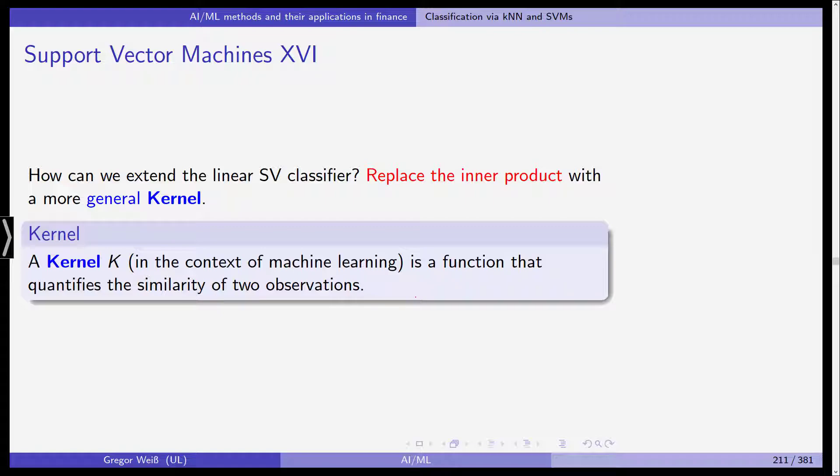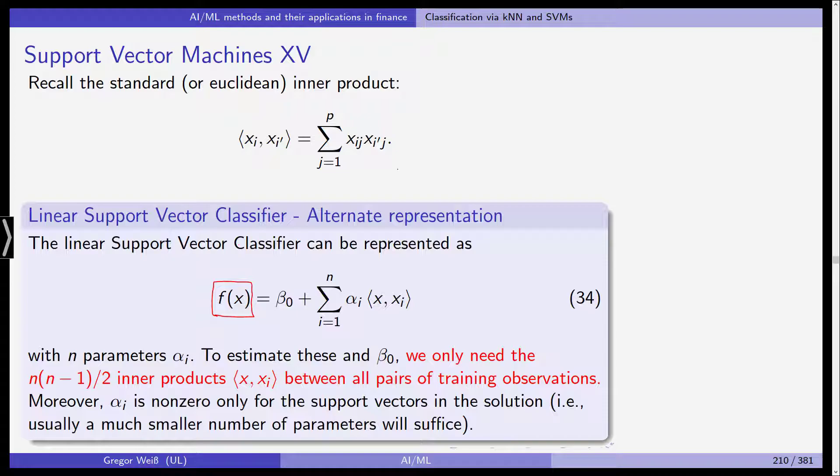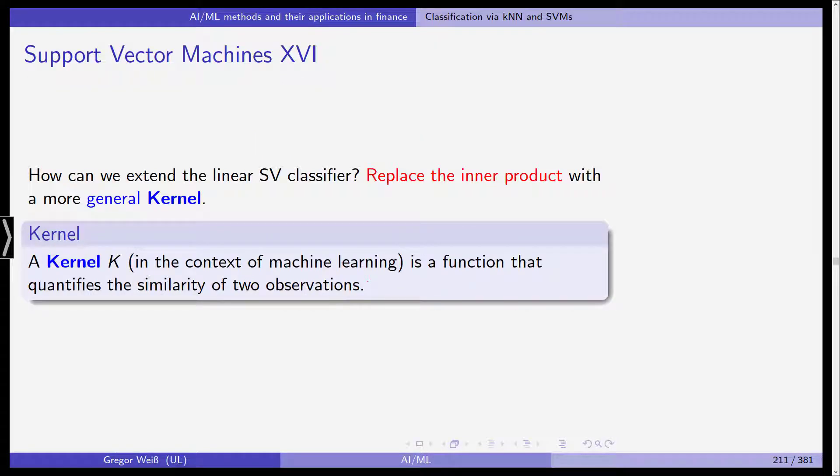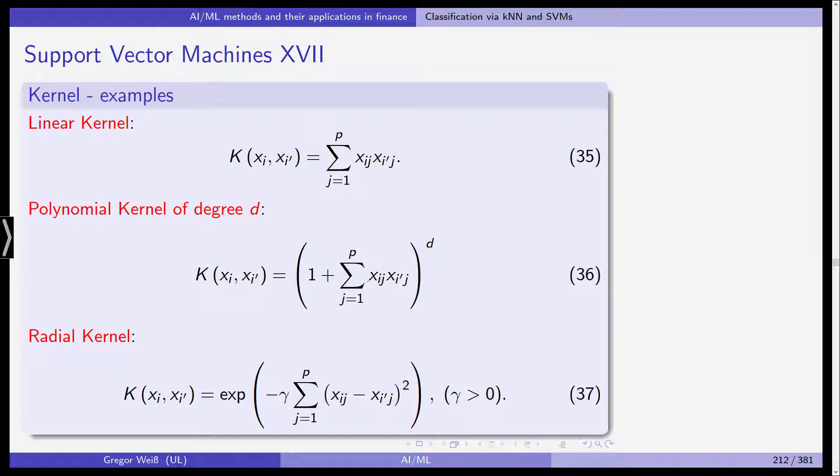What is a kernel? A kernel k, at least in the context of machine learning, has slightly different meanings in different parts of mathematics and statistics. But here in the context of machine learning, a kernel is a function that quantifies the similarity of two observations. So, we have two observations, x1 and x2, and a kernel is a function that in some way measures the similarity. It could also be the distance between those two points, and this is what we call a kernel. Quite clear, in the case of the inner product, this is of course a function that measures the distance in the Euclidean space between those two vectors. So, we need to replace the inner product here with a different kernel, and then we get a more general extension of the support vector classifier.